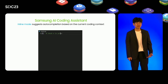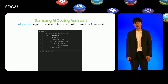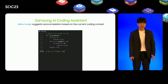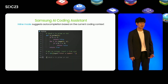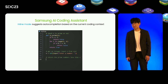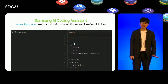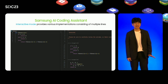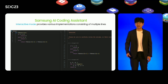Let me illustrate how our coding assistant works. In the inline mode, it suggests code based on provided comments and function names. For example, users can effortlessly create a Python program to check for prime numbers and return a smaller one based on user input. In the interactive mode, users receive suggestions for various implementations based on the function they are working on, such as the Fibonacci sequence. Users can easily incorporate their desired logic with a single click.